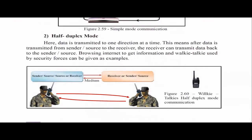Next is half duplex mode. Data is transmitted in both directions, but only one direction at a time. When the sender is sending information, the receiver has to wait; after the communication is done, the receiver can then transmit back. Both parties cannot communicate simultaneously. Walkie-talkies use this mode. Even browsing the internet is half duplex — you send a request, then receive the response.